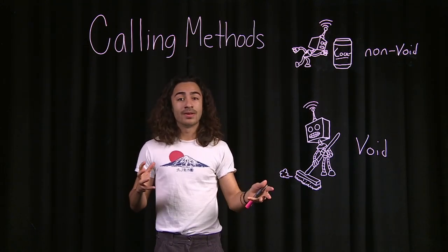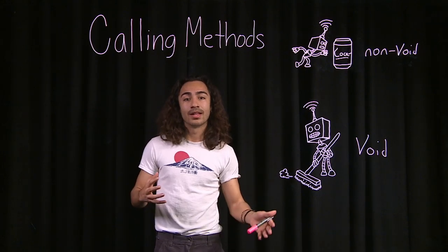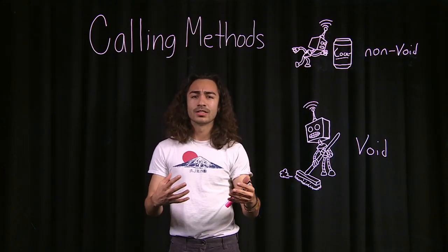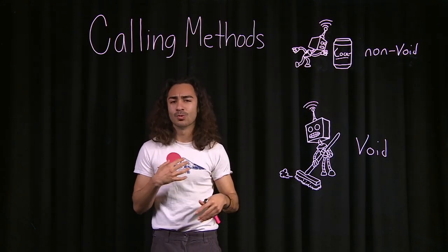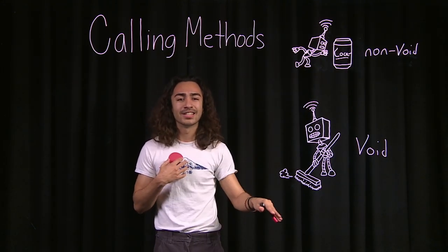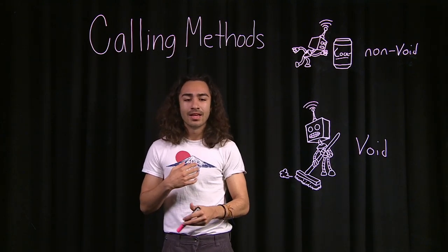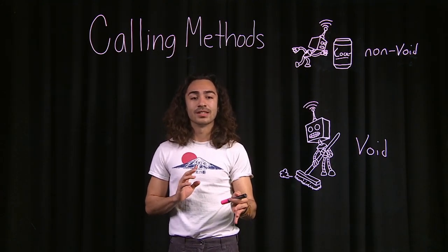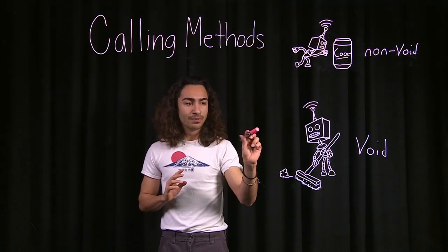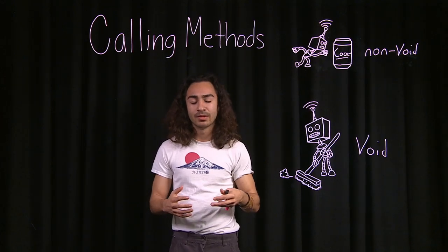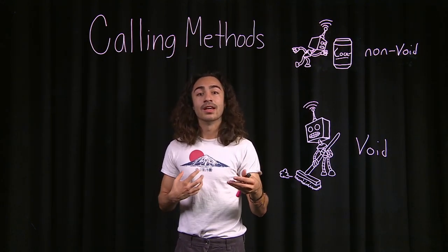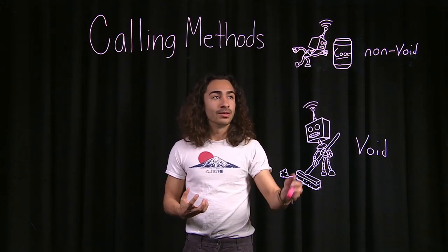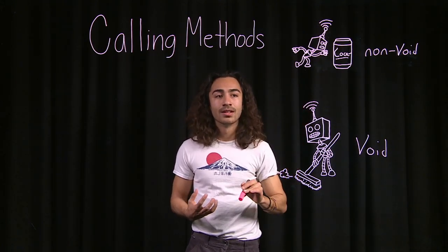These are very useful in coding because not all the time you want something brought to you. You just want something done. Let's say in your console you just want something printed out multiple times — you do void. But let's say you want something in return, like a value or a string — you do non-void.